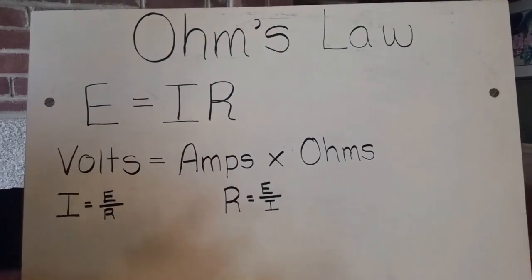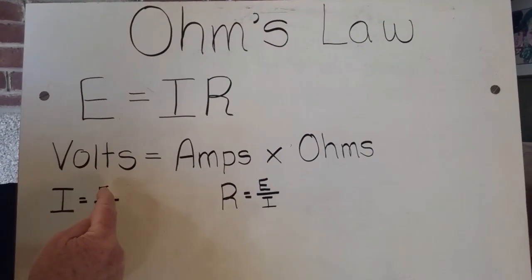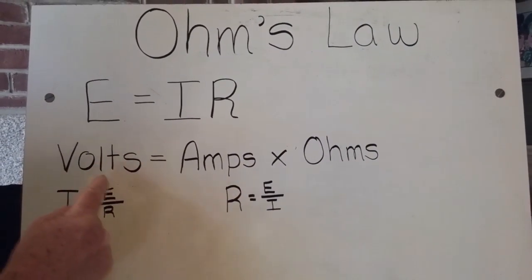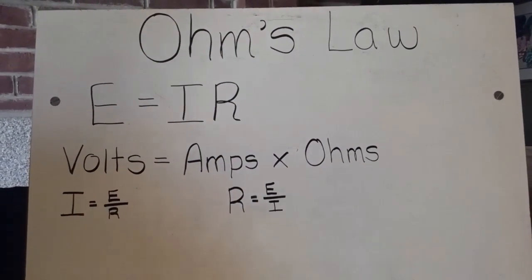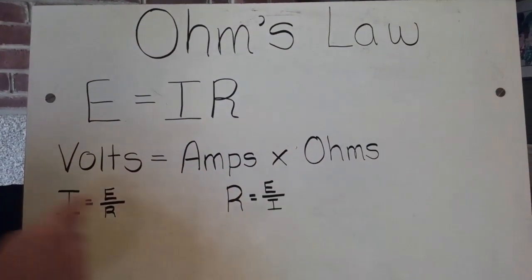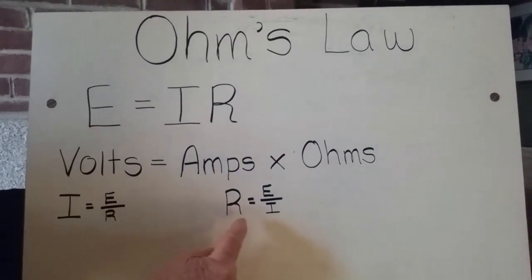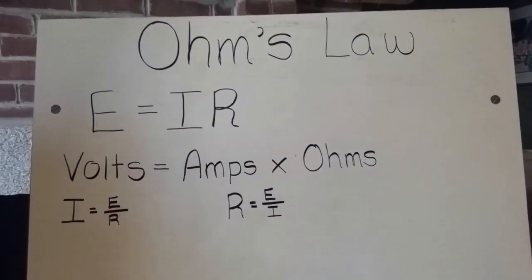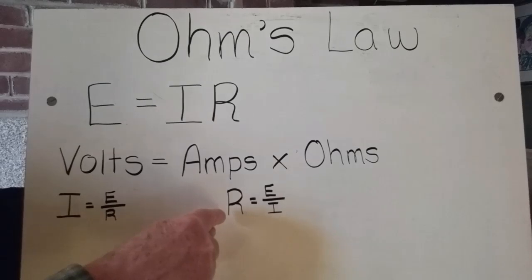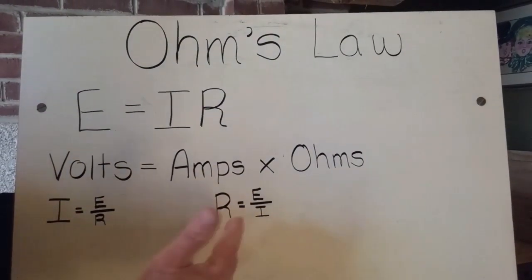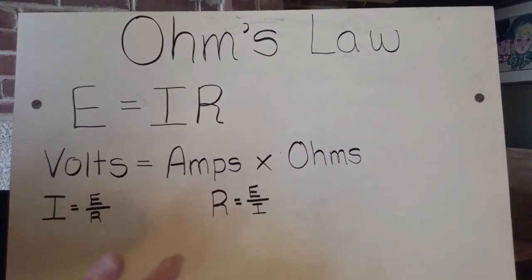Most of the time, if we're talking a solar system, we're saying E is going to probably be constant. It's going to be your battery bank or your solar panel. So you want to solve for I or you want to solve for R. Again, we don't usually solve for R in systems like this. This is more circuit board stuff, but you can do it.